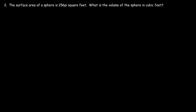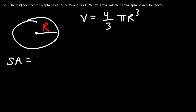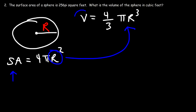Problem two: the surface area of a sphere is 256 pi square feet — what is the volume of the sphere in cubic feet? Let's draw a picture showing the radius, which is what we need to find. The formula for the volume of a sphere is 4/3 pi r cubed, and the surface area formula is 4 pi r squared. We're given the surface area and need to find the radius first.